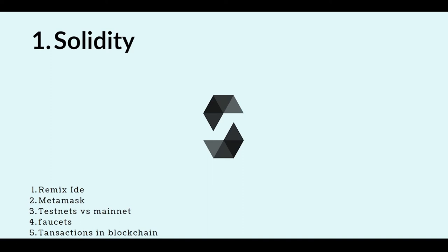A smart contract is essentially a script that we write, and someone using their wallet — like MetaMask — will use those smart contract functions to do something. For example, if I want to transfer money to my brother Jayesh, I will use the transaction function in my smart contract. That's how smart contracts are used.